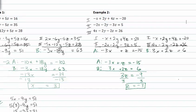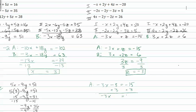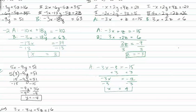Now that we have z, we're going to take that value and substitute it into equation a. This gives negative three x plus negative three equals negative fifteen, which is negative three x minus three equals negative fifteen. Adding three to both sides gives negative three x equals negative twelve. Dividing by negative three, we get x is equal to four.